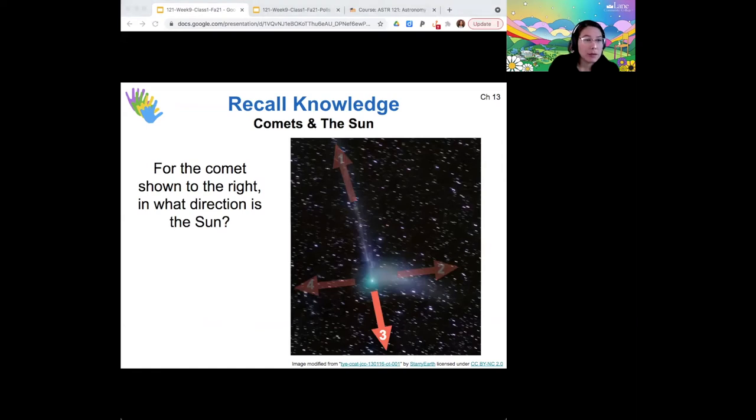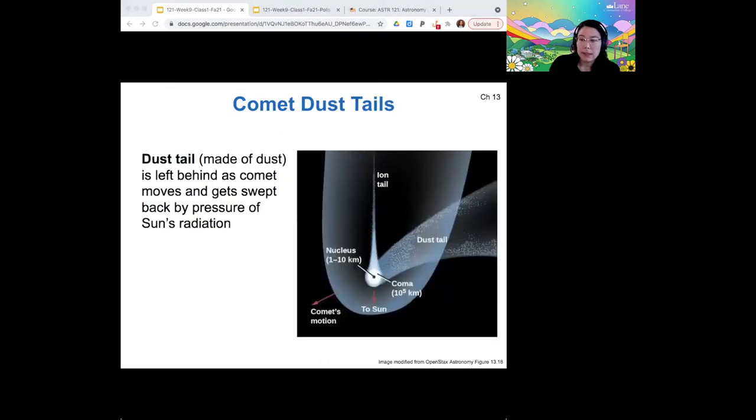So let me come back to that diagram real quick. This ion tail points directly away from the sun, and you can always distinguish the ion tail from the dust tail because the ion tail is really thin. Essentially, this is made of it's being swept along. And so it's moving quickly away from the comet. It's swept away by the solar wind.